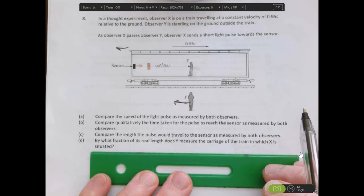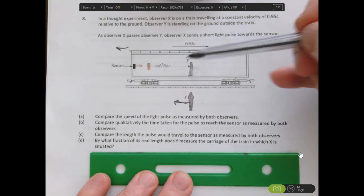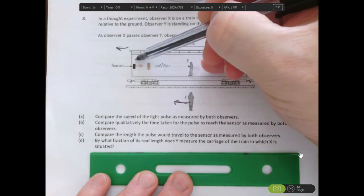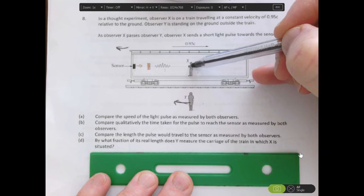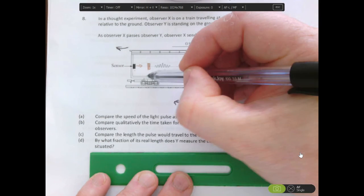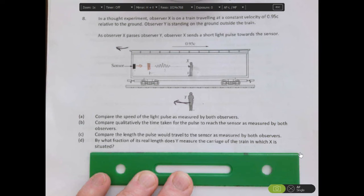This brings us to C: comparing the length the pulse would have to travel. Well, X sees it travel the entire carriage, but Y sees it only have to move this much here. The foreshortened amount.